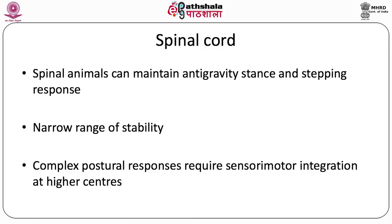However, what was lacking in the spinal animal was the ability to maintain postural balance — the upright stance was very unstable and any displacement beyond a certain point caused collapse. This demonstrated that sensory motor transformations — sensing imbalances and transforming them into appropriate postural responses — take place at levels higher than the spinal cord.